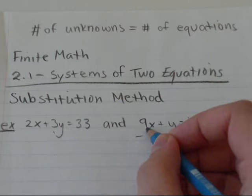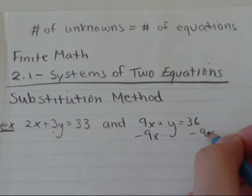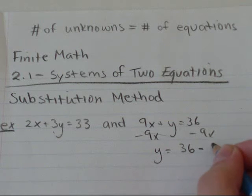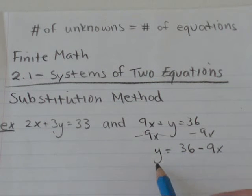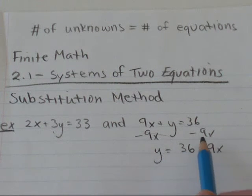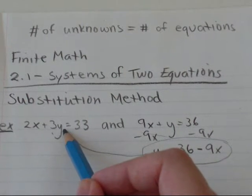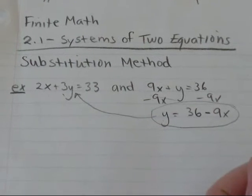So I'm going to subtract 9x from both sides and get y equals 36 minus 9x. So now I have y all by itself.